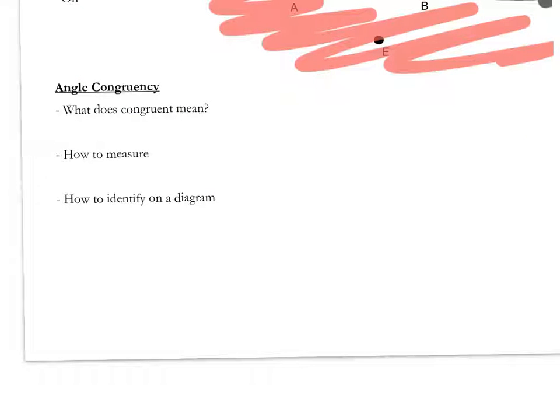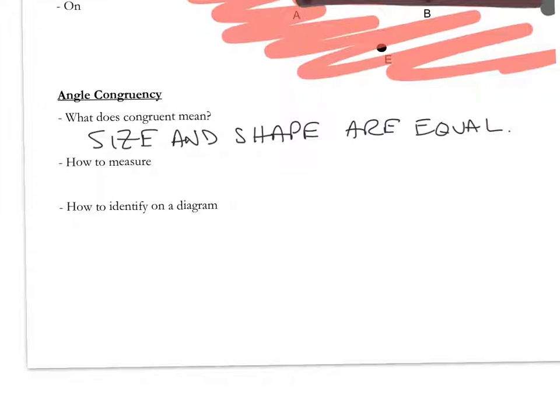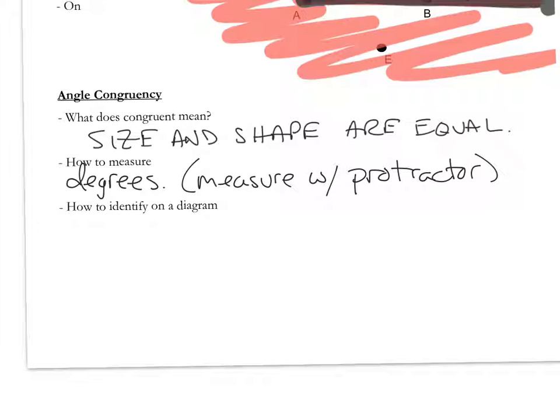Let's scroll down to angle congruency. Remember, congruent has to do with size and shape being equal. They have to be the same type of shape. We're not talking about apples and oranges here. They both have to be angles. And they've got to be the same size, so the actual measurement. We're going to measure using degrees. A common measurement type would be, we can measure with a protractor.